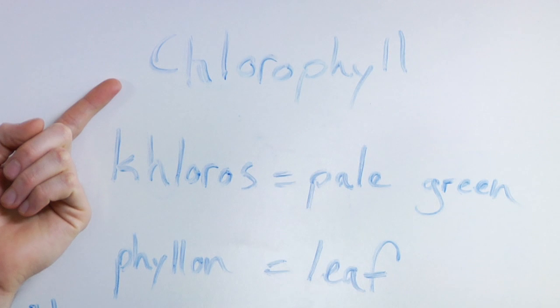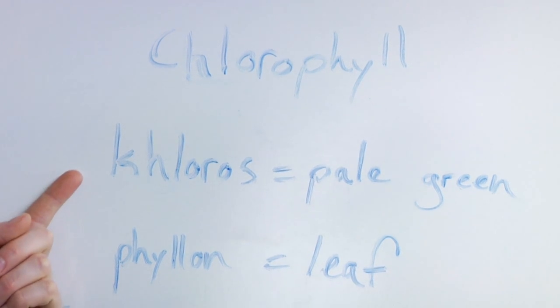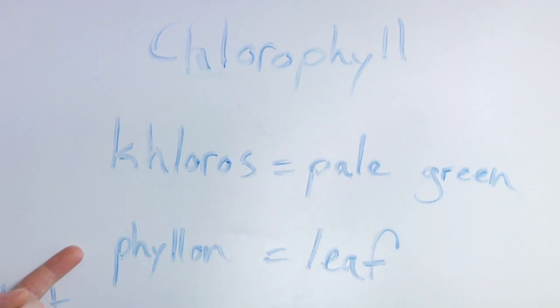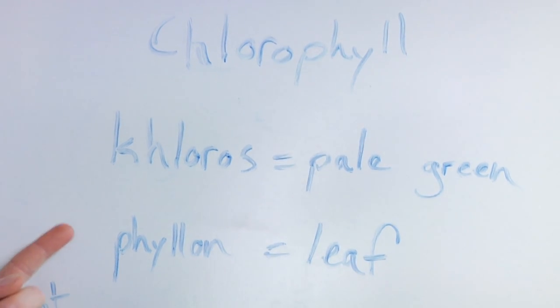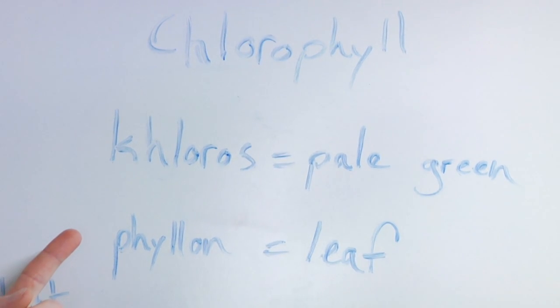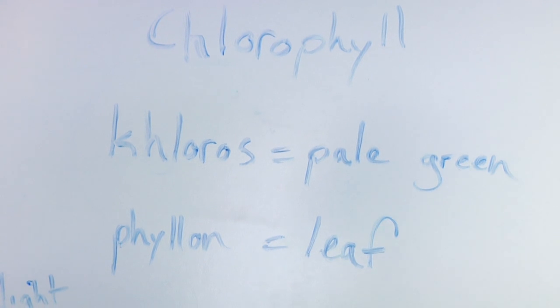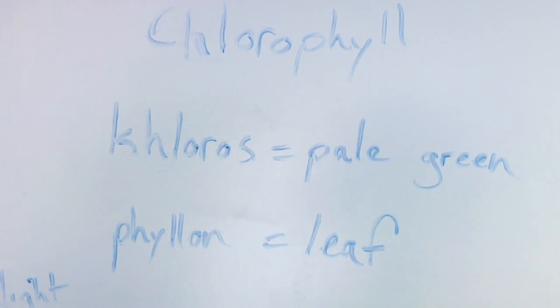Chlorophyll is made up of two Greek words. The first one is chloros, which means pale green. The second one is phylon, which means a leaf. So chlorophyll means pale green leaf, and that helps you remember that it is the pigment that gives leaves their green color.